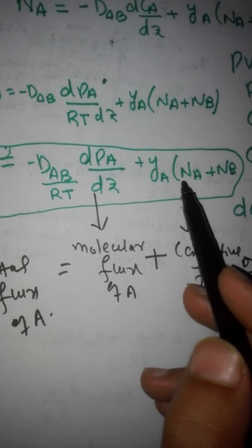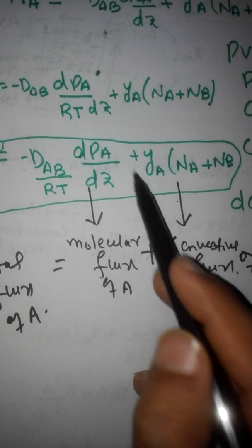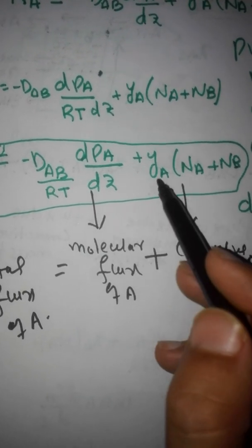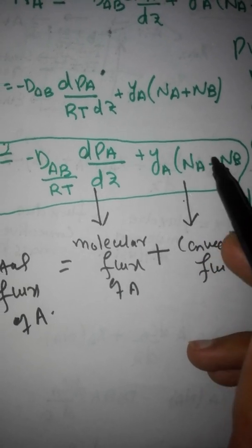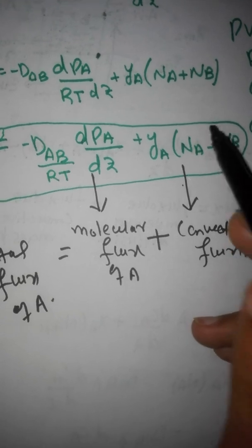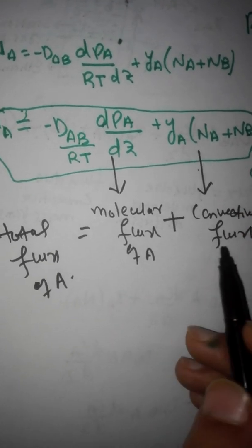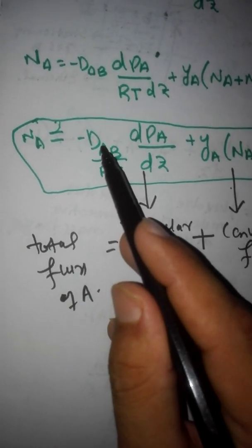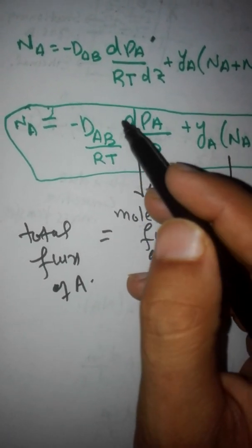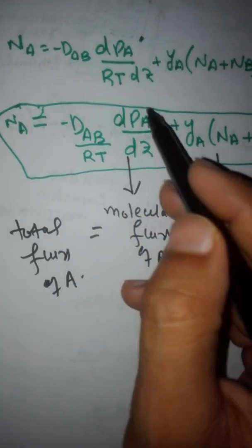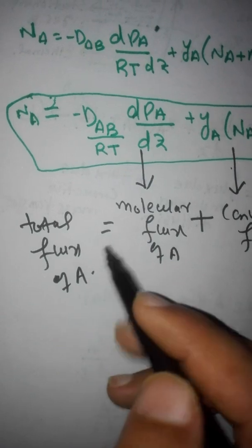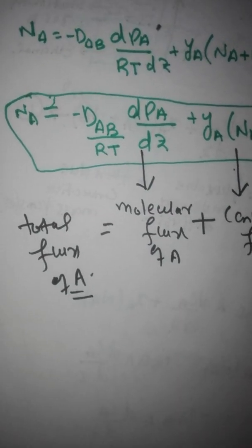When these two are combined, they form the total flux of A. The mole fraction term has no units, and (N_A + N_B) has units of moles per unit area per unit time. So the result is the molar flux of A. The combined molecular and convective fluxes give the total flux of A. Thanks.